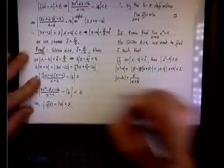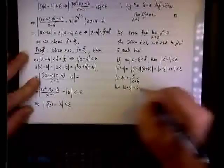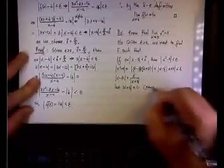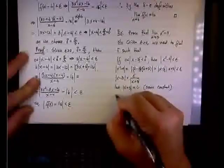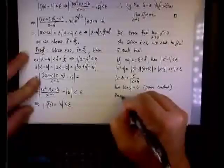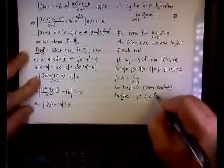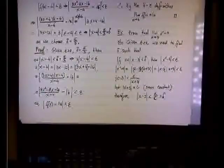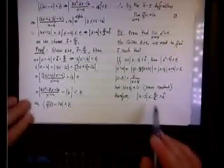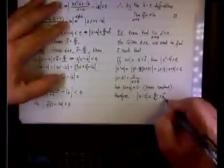I'm going to let the absolute value of x plus 3 equal some constant c. Therefore, the absolute value of x minus 3 is less than epsilon divided by c, and we'll call this delta₁. This is the reason I brought this exercise — because you may have something like that where you need to decide what to do with c.